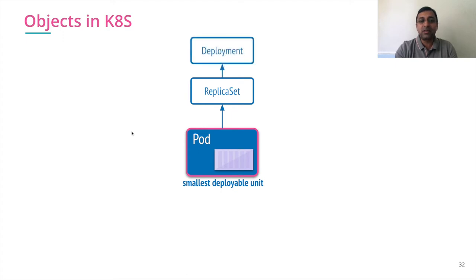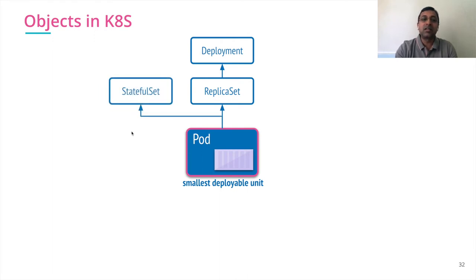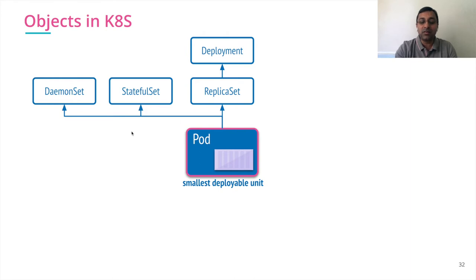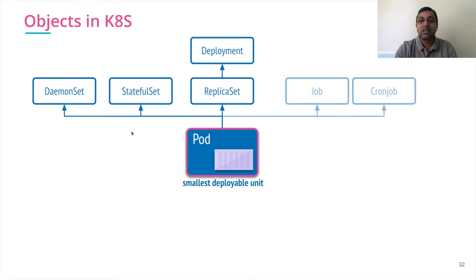Another abstraction on top of ReplicaSet, which provides you with upgrades, rollouts, and all that, is Deployment. The stateful nature of the application is handled by the StatefulSet abstraction. DaemonSet is a special type of replica of a pod which helps you achieve certain specific behaviors. Jobs and CronJobs are a special type of pod which are not long-running applications.